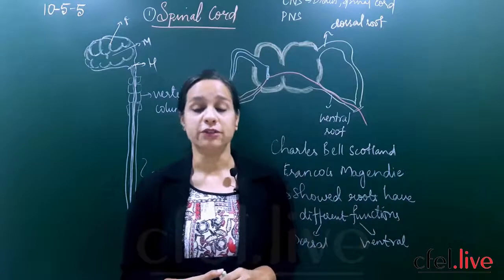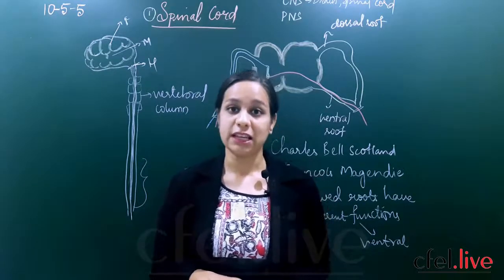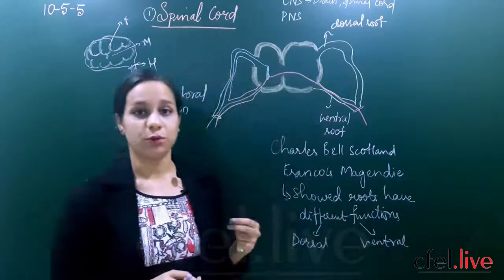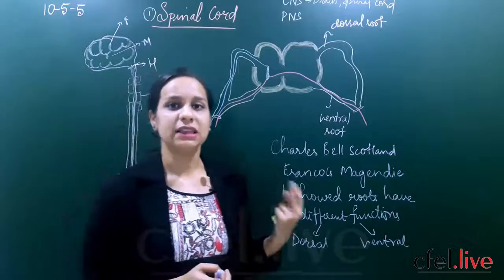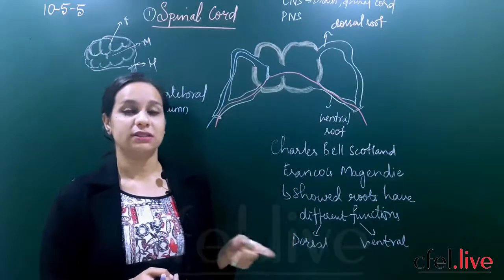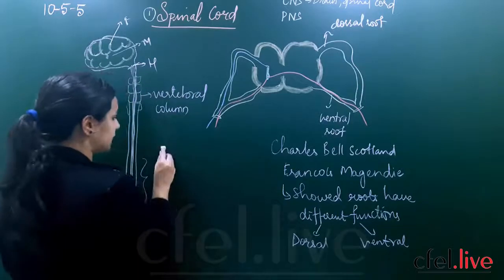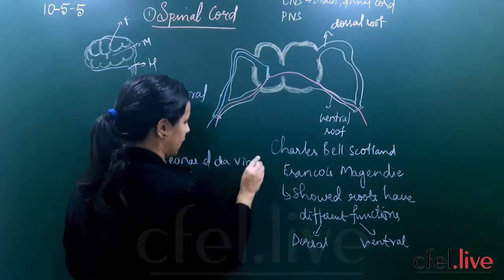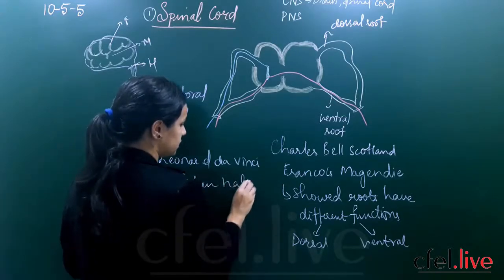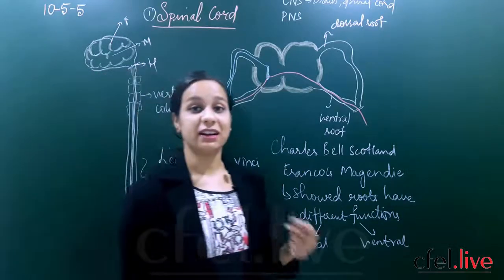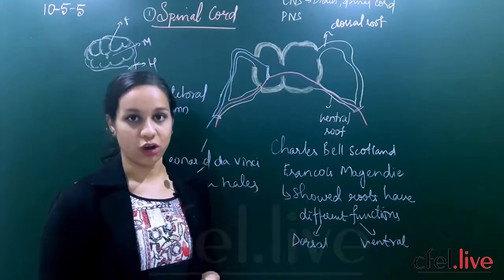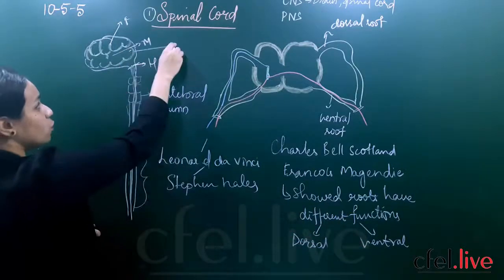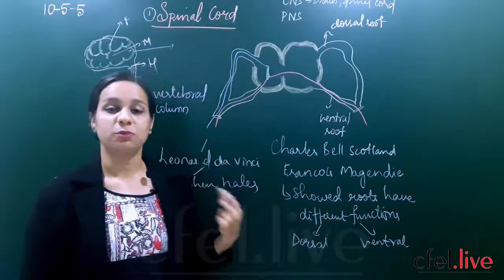So what exactly is the function of spinal cord? In the earlier 18th and 19th centuries, scientists found that it was only the brain which was responsible for the process of coordination in our body. They were thinking that the brain alone was responsible for coordination, and they did not know what the function of the spinal cord was.